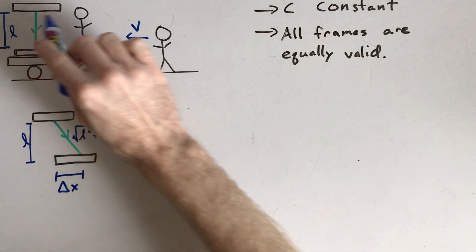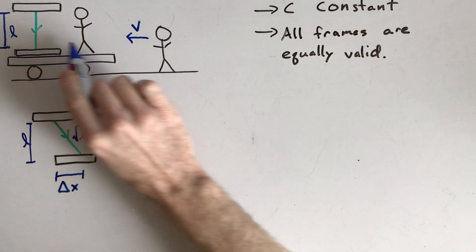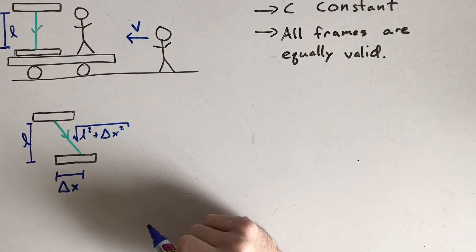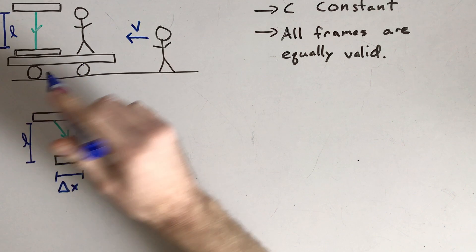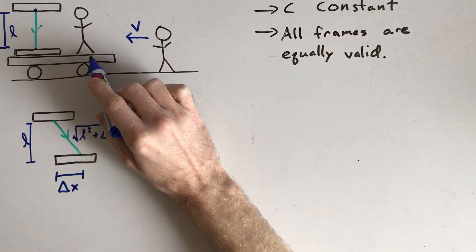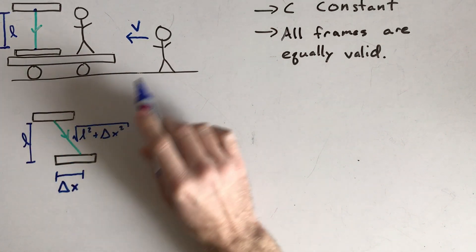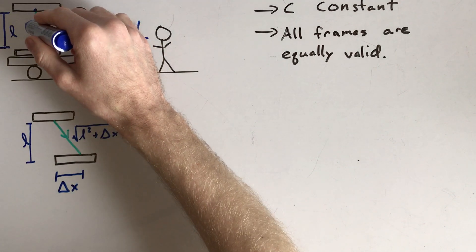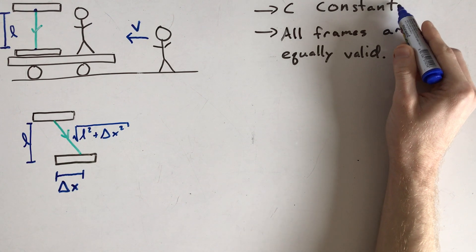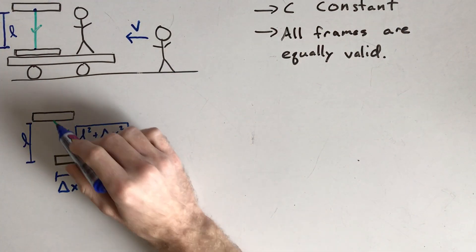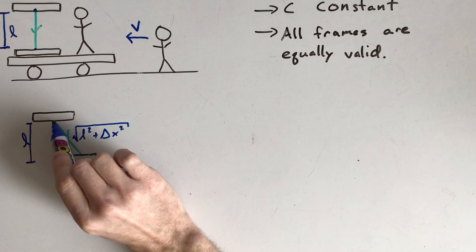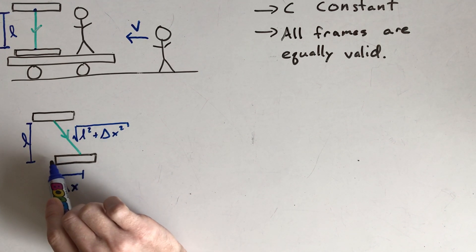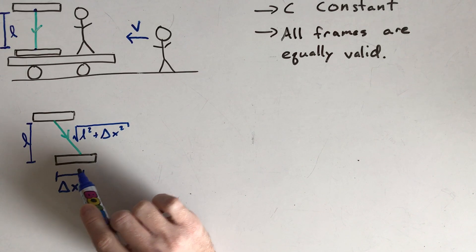From the ground observer's frame, they see the train car moving to the right. Because of this, the light clock is moving to the right, which means the beam of light that went straight down according to the train observer is actually going to take a sideways diagonal path according to the ground observer. So the light takes a longer path according to this ground observer.